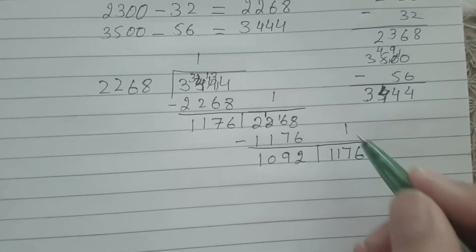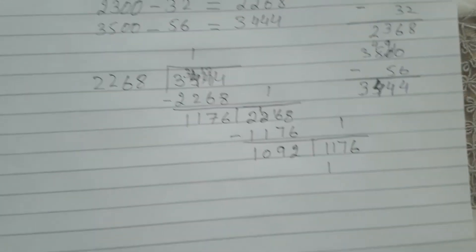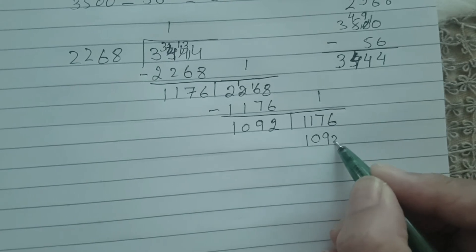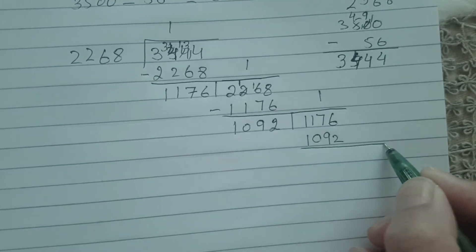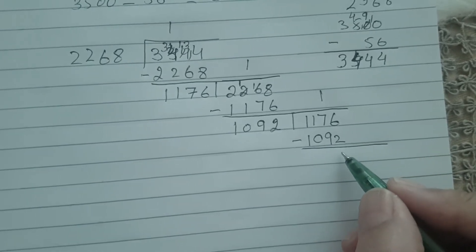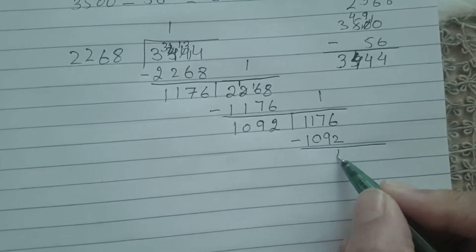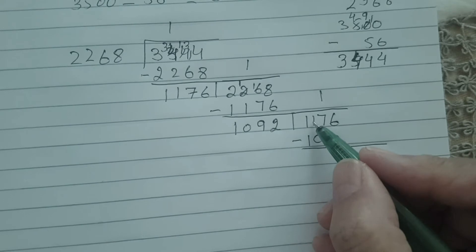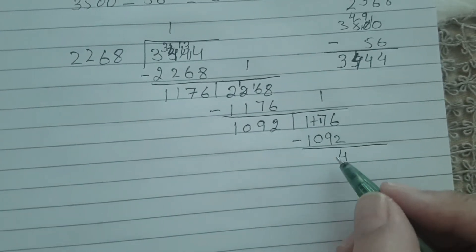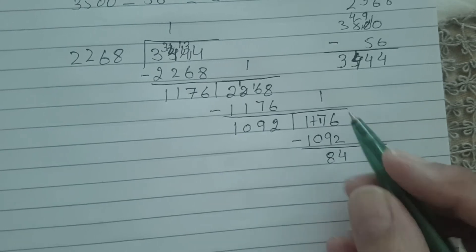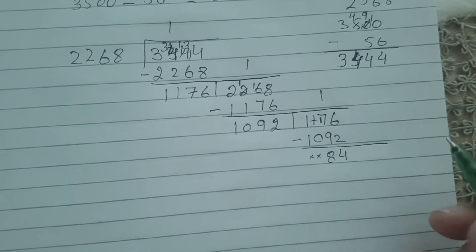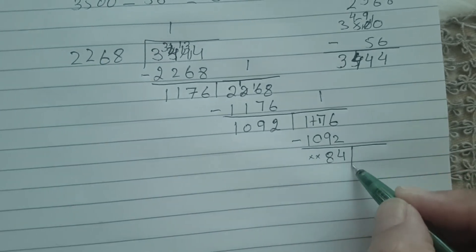Next dividend is 1176. One time gives you 1092. Do the subtraction: 6 minus 2 is 4, bring 1 here, make it 17. 17 minus 9 is 8. You will cut down both zeros. Now you are left with 84.